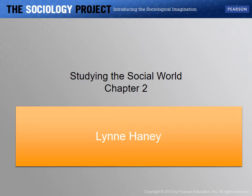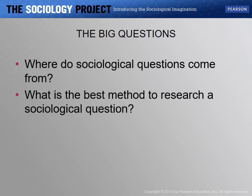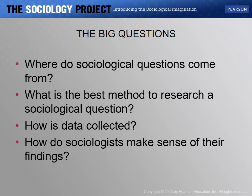Chapter 2 is on research in the social sciences, especially sociology. The key questions are: where did sociology come from, what is the best method to research sociological questions, how is data collected, and how do sociologists make sense of their findings. Remember these four questions — some or all may be on the second quiz or second assignment.